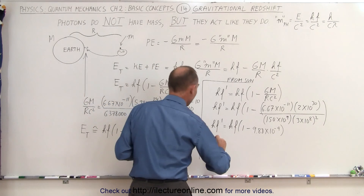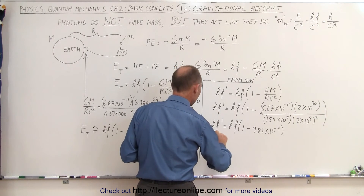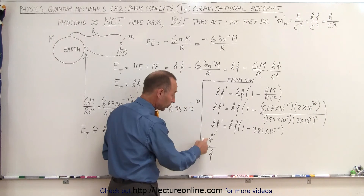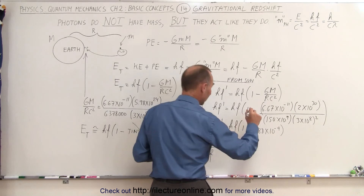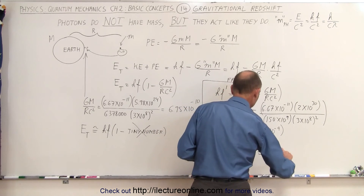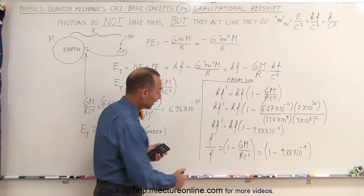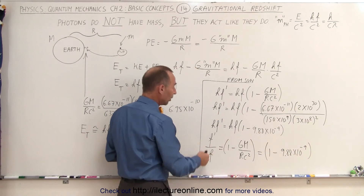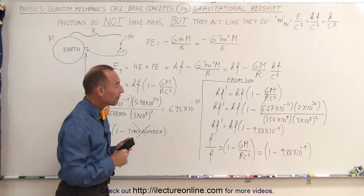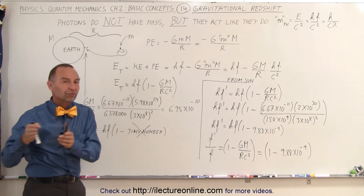Dividing both sides by h, we get f prime over f — the new frequency divided by the old frequency — equals 1 minus GM over rc squared. In the case of the sun, that's 1 minus 9.88 × 10⁻⁹. This fraction is smaller than 1 by a tiny amount, meaning the frequency decreases and the wavelength increases. That is gravitational redshift: longer wavelengths mean the light is shifted toward the red.